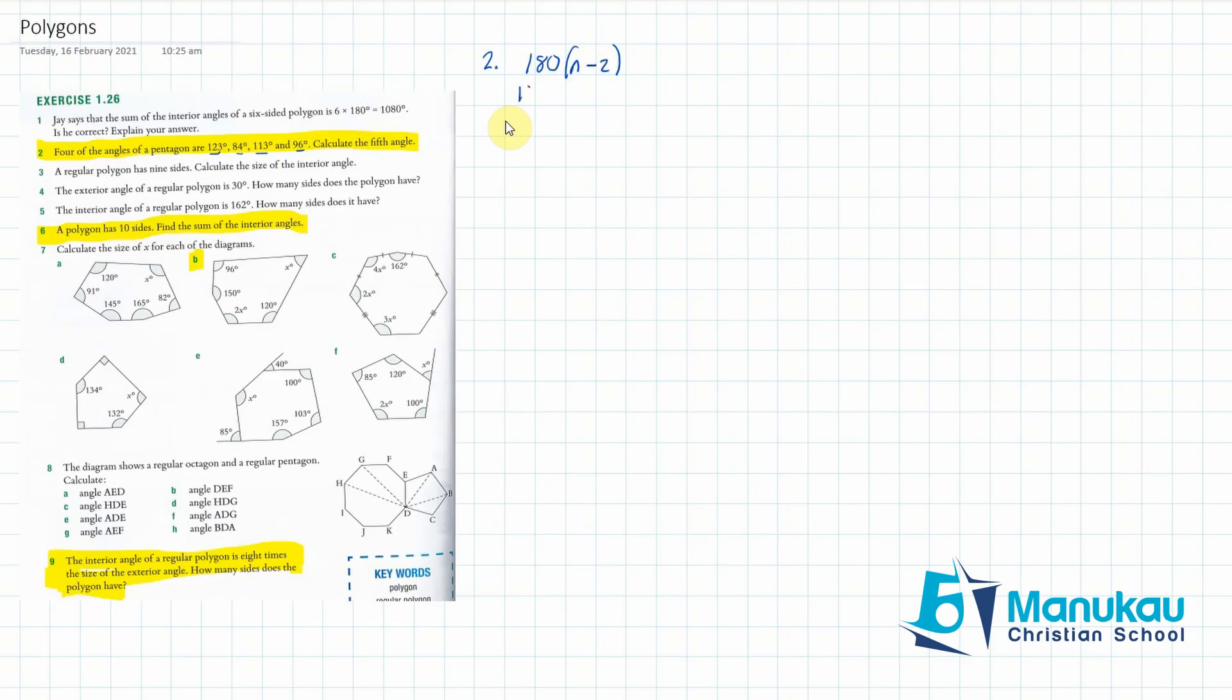So in this case, we're going to be 180 into n. A pentagon has five sides, so it'll be 5 minus 2, which is 3. And so the sum of the interior angles is 540 degrees.